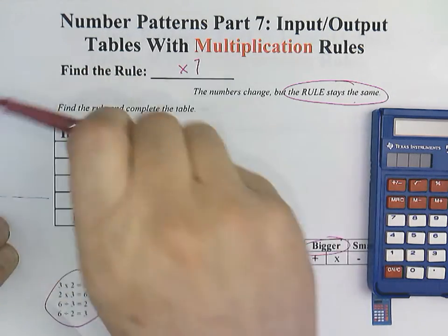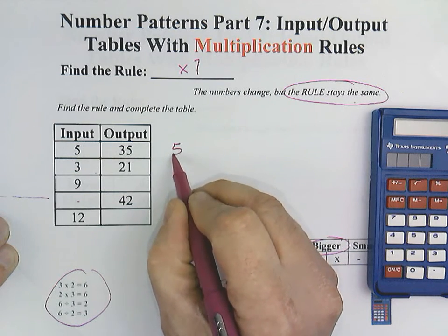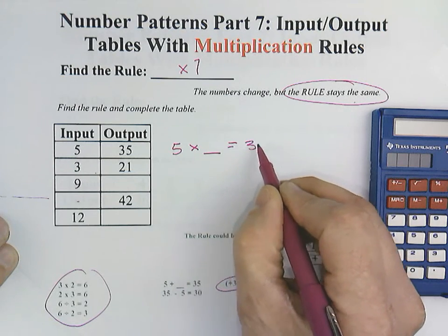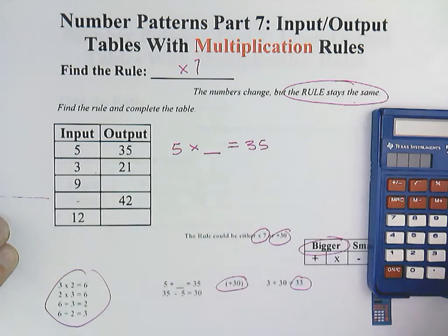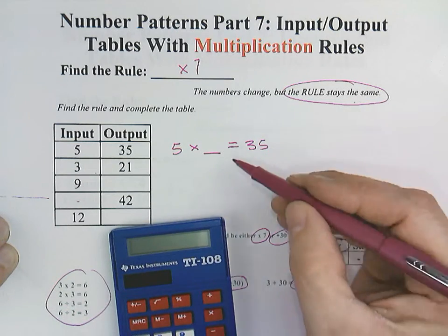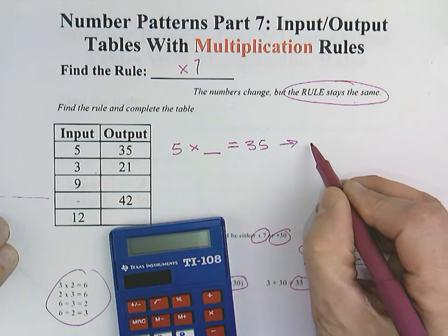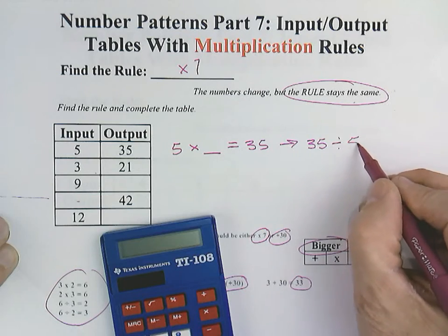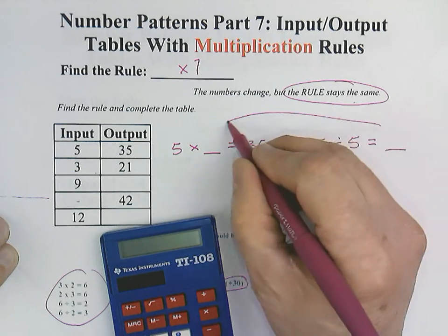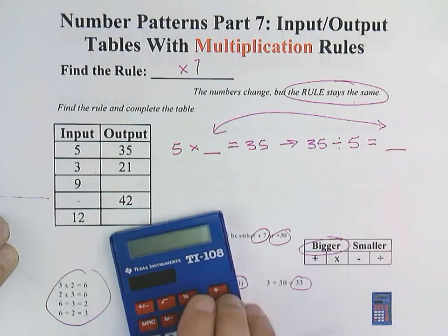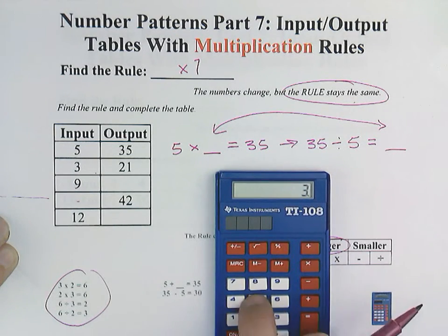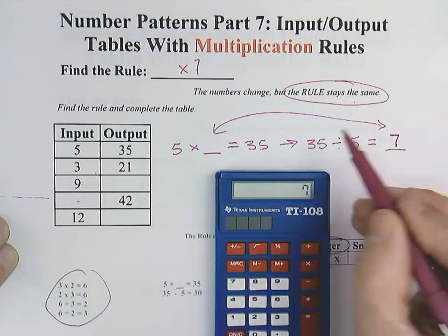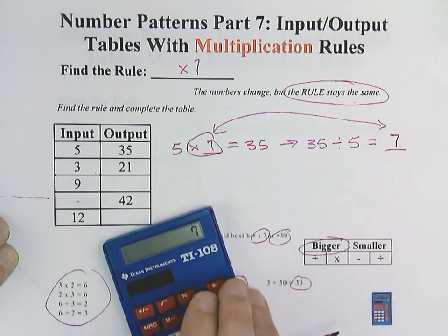All right, let's go back. Let's show it one more way. We would start with 5 times blank equals 35. So imagine if you did not know that that was a times 7 rule. What we can do is because of our knowledge of fact families, we could say 35 divided by 5. And whatever this number is, because of fact families, it would also be that number as well. So 35 divided by 5 would equal 7. If it's 7 here, it has to be 7, which means this is a times 7 rule.